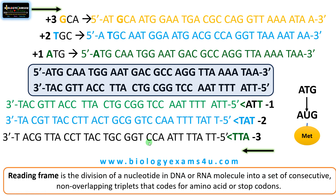So for a double-stranded DNA, we have six reading frames, and each reading frame codes for a different amino acid composition. You can watch our video on the difference between reading frame, open reading frame, and coding sequence for more on this topic. Take care. Stay blessed. Thank you so much. You are with biologyexams4u.com.